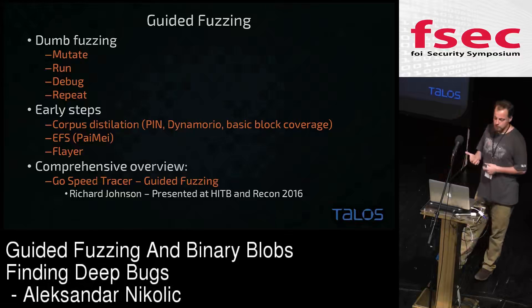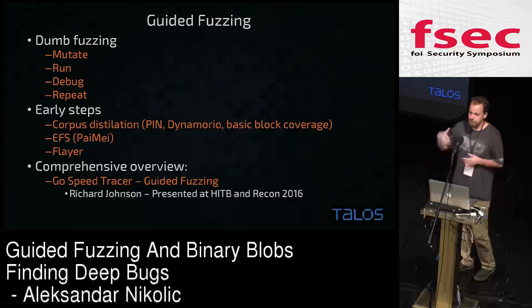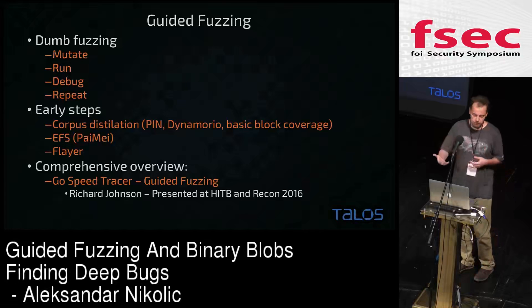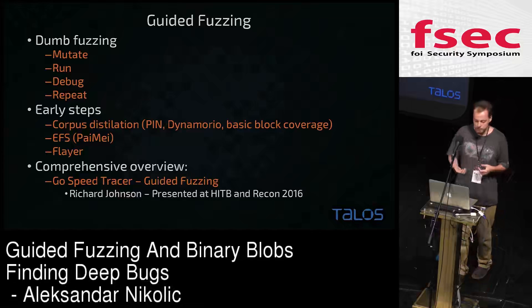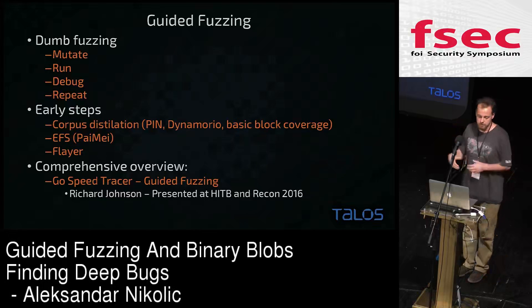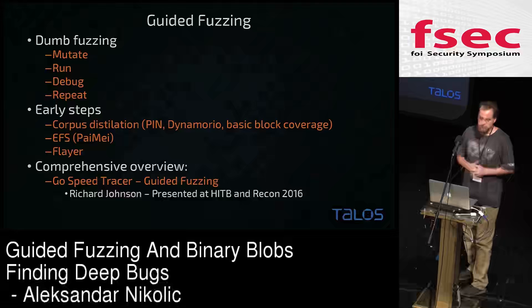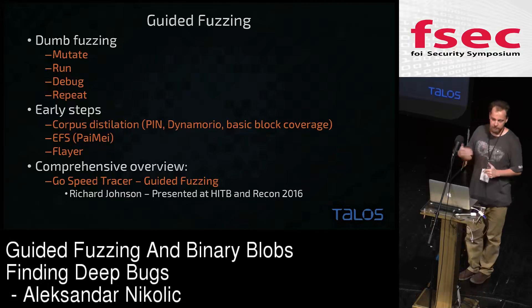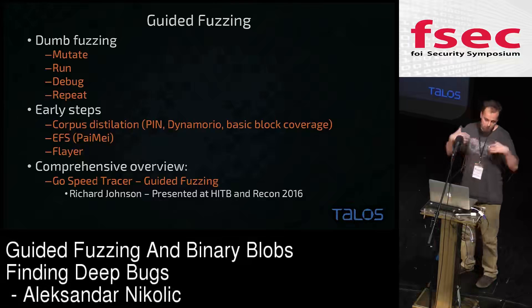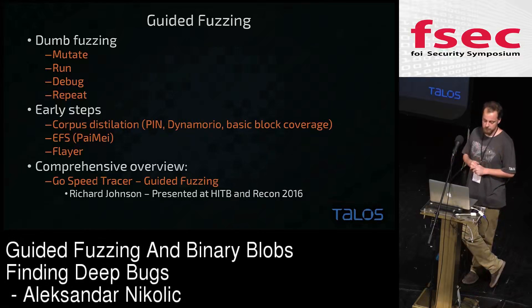Early steps in guided fuzzing include corpus distillation. Starting with thousands and thousands of files, how do you know which files actually test new paths inside the process you're testing, and which are actually beneficial? To do that, people have been developing tools that work using PIN framework or DynamoRIO, which usually just record basic block coverage and then use that to minimize the corpus to the most interesting files.